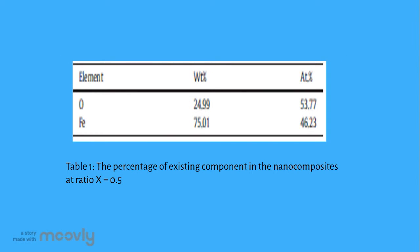The EDX atomic ratio results are listed in Table 1, confirming the percentage of existing components in the composite. The weight ratio of the elements in the sample is close to the theoretical stoichiometric weight ratio: 75.01% iron and 24.99% oxygen, which is very close to the chemical composition of 0.5 Fe3O4. This data shows that the total iron concentration in the given ratio is close to the theoretical weight, and it is a summation of iron in both hematite and magnetite content of each nanocomposite.